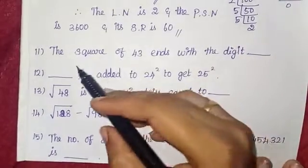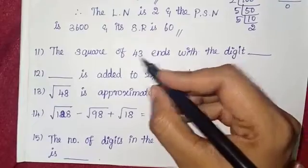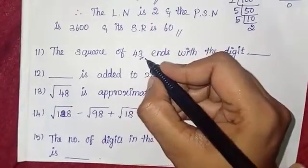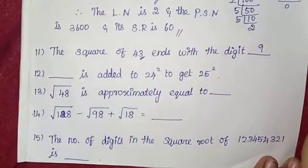The square of 43 ends with the digit 9. Since 3 squared equals 9, the last digit is 9. So the answer is 9.